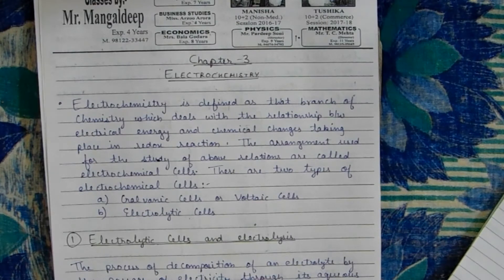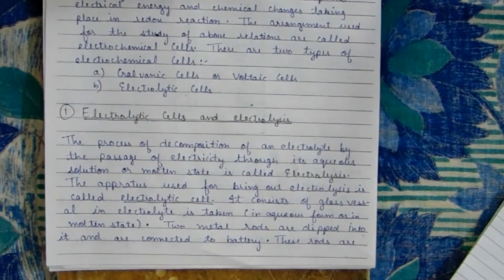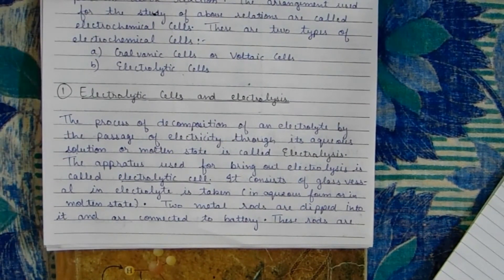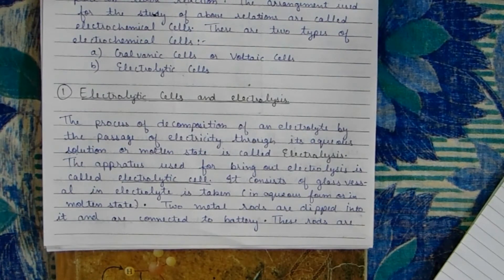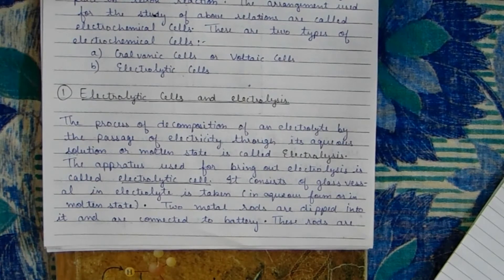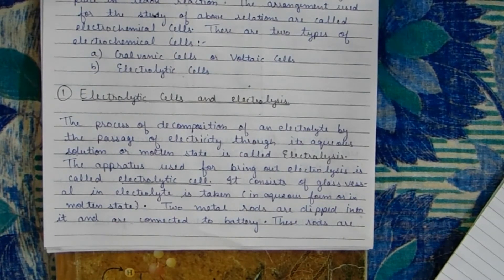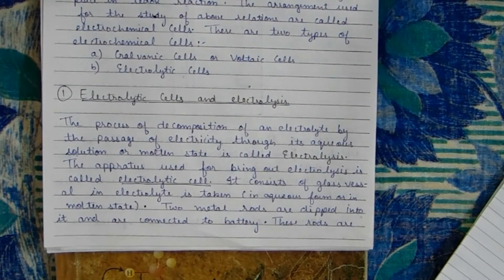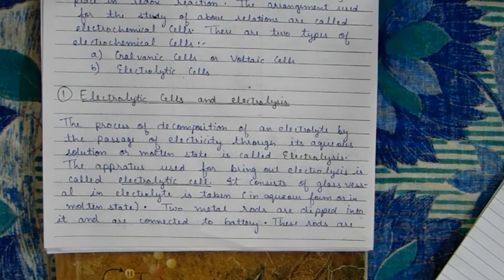So that was our introduction to electrochemistry. We can make two types of electrochemical cells. The first topic we will discuss is electrolytic cells and the electrolysis process. First of all, we need to know what electrolytes are. Electrolytes are those substances that dissociate to produce ions in their aqueous solution or molten state.